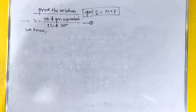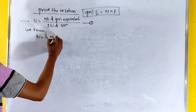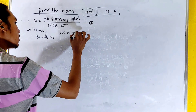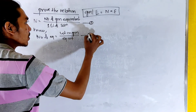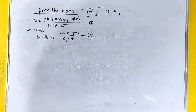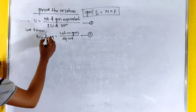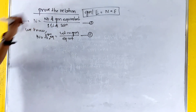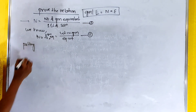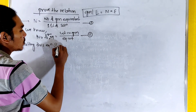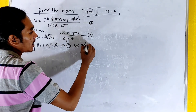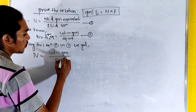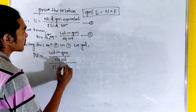Equation two: the number of gram equivalents is equal to weight in grams divided by equivalent weight.